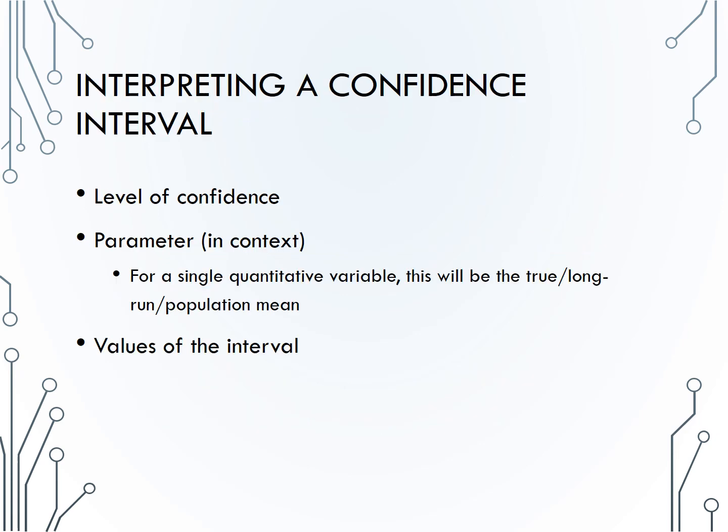Finally, the way to interpret a confidence interval has not changed. We still need the following three components: how confident you are in the interval, what the parameter is that you're trying to estimate in the context of the problem. For a single quantitative variable, this will always be the true or long-run or population mean, and then be sure to give the context of what you're taking the mean of. Finally, include the end points of the interval that you calculated.